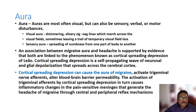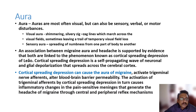Aura can manifest as zigzag or silver lines in front of the eyes, visual field disturbances, temporary visual loss, or spreading numbness from one part of the body to another. These auras represent cortical spreading depression throughout the neuronal system.